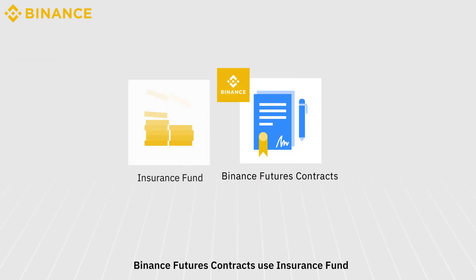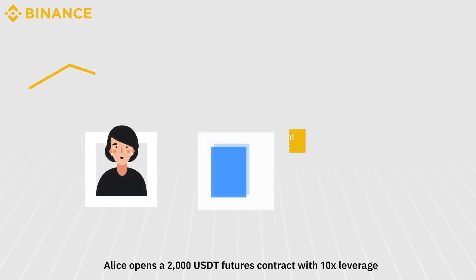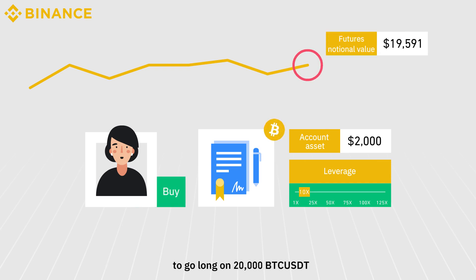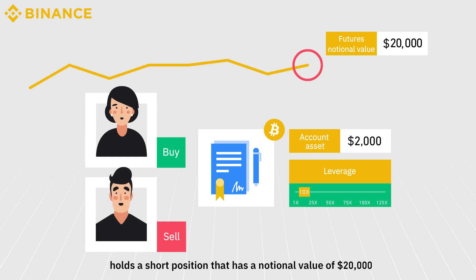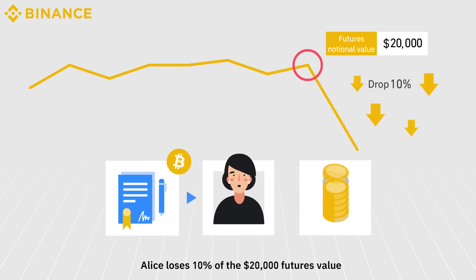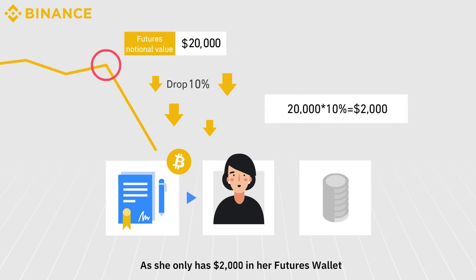Binance Futures contracts use Insurance Fund and Auto Deleveraging mechanisms to protect users from margin call losses. For example, Alice opens a 2,000 USDT futures contract with 10 times leverage to go long on 20,000 BTC USDT. Bob, the counterparty, holds a short position with a notional value of $20,000. If BTC drops 10%, Alice loses 10% of the $20,000 futures value — that is, 2,000 USDT. As she only has $2,000 in her futures wallet, it means she has lost all her funds.